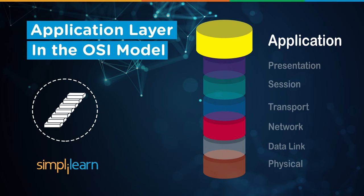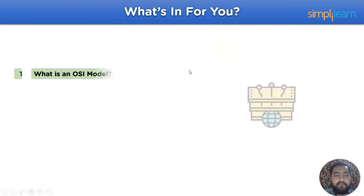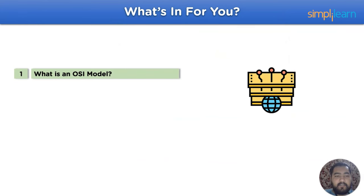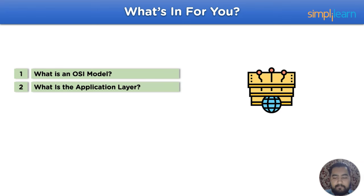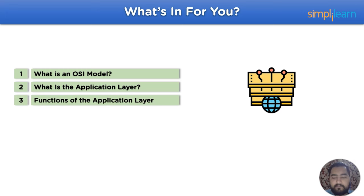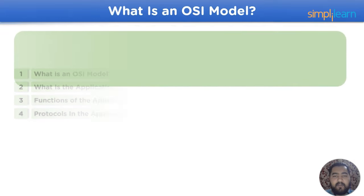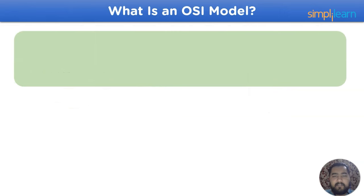Now, without further ado, let's take a look at the agenda for this session. The first topic is what is an OSI model, continuing with what is the application layer, moving forward with the functions of the application layer in a network model, and the last topic is protocols in the application layer.